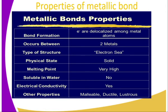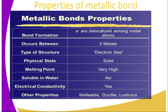Other properties include malleable, ductile, and lustrous. Malleable means they can be made into sheets — for instance, iron sheets. Ductile means they can be made into wires.